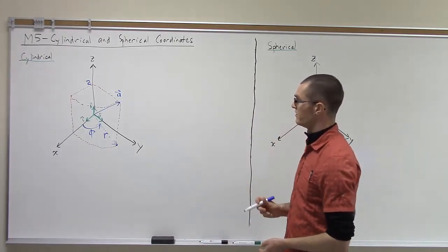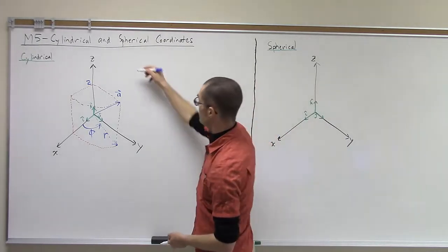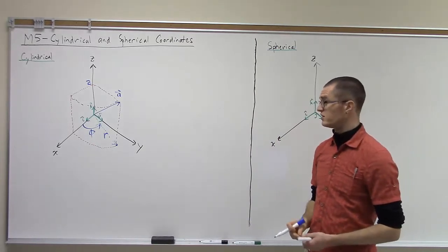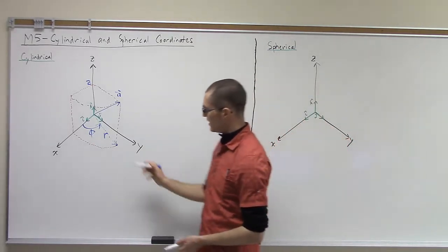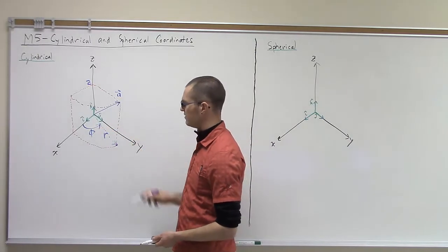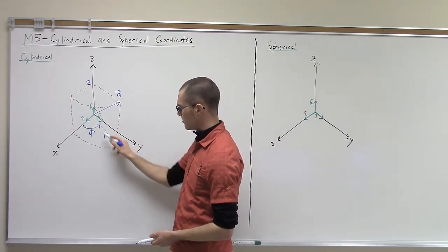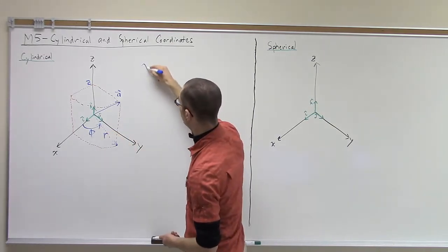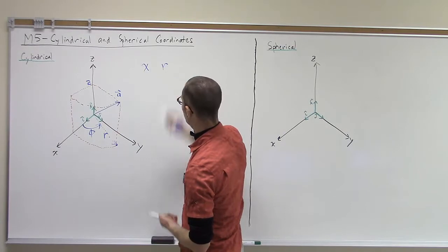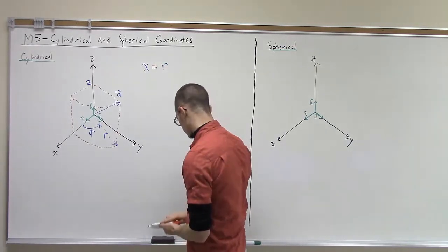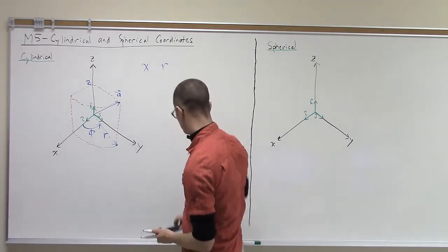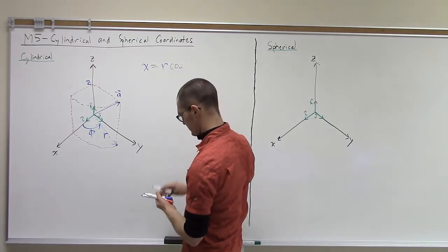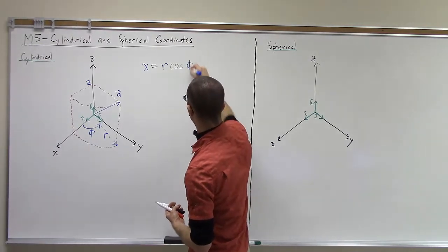We can relate these coordinates to the Cartesian coordinates by looking at the trigonometric relationships between the coordinates. So if I have r-theta defined, I can get the x-coordinate by taking the radius times the cosine of this angle. So x is r cosine of phi.